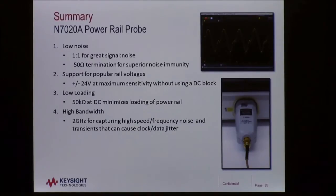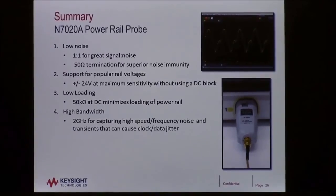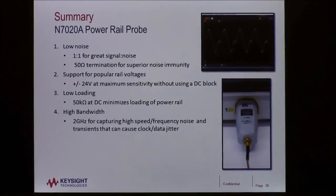Third users wanted low loading. We accomplished that with this probe by having a 50k ohm DC input impedance. Remember the example I showed you with going into 50 ohms and the excessive loading? This probe gets around that by having 50k ohms of DC. And finally high bandwidth so that people can track down those troublesome high-frequency noise and jitter that can disturb their clock and their data.